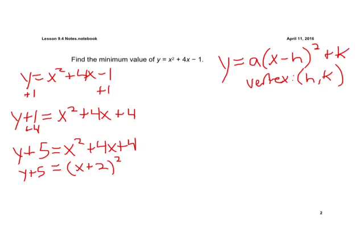Now if we look up to the top right there we're almost in that vertex form. We have our parentheses, we have our a which is just 1 before it, we need plus k. So if we subtract 5 on both sides now we have y equals x plus 2 squared minus 5. We have it in vertex form.